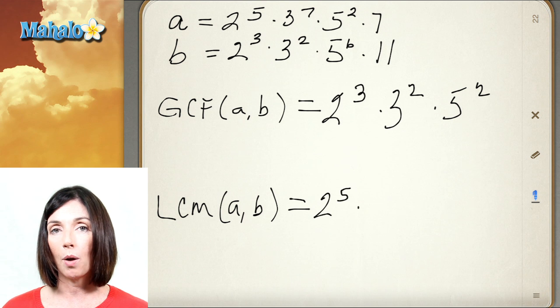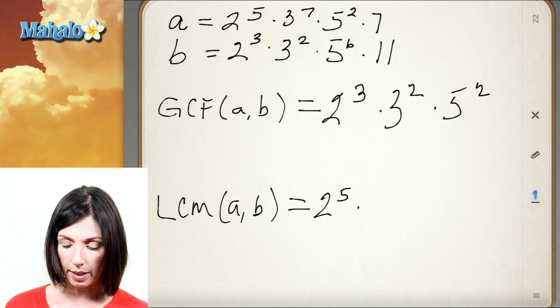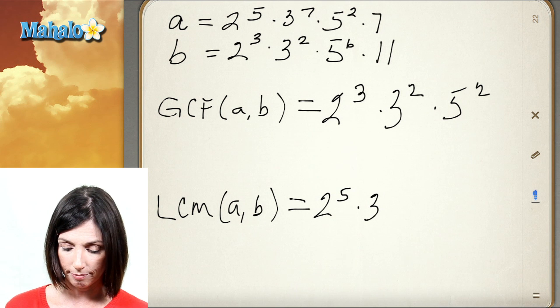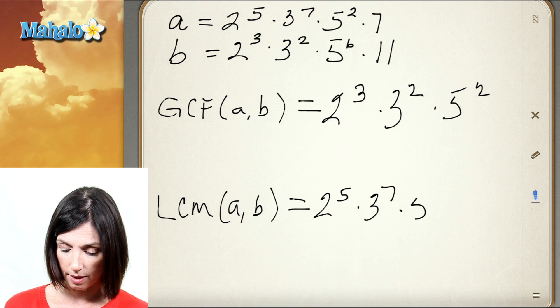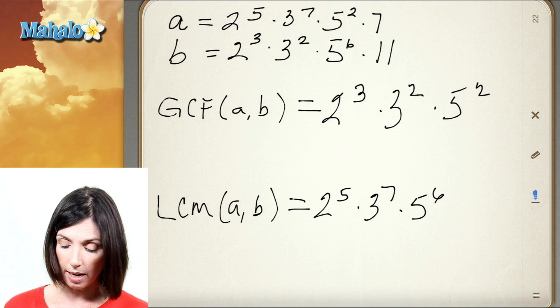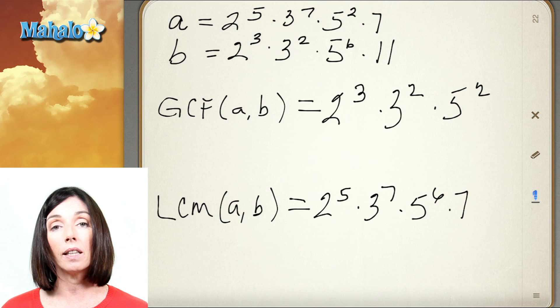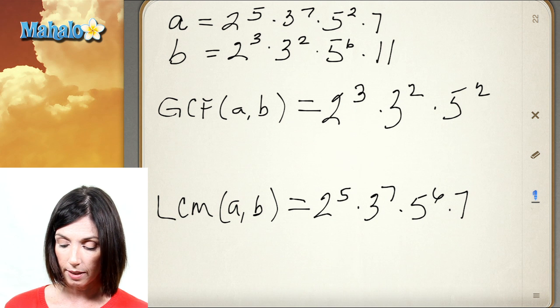And then the largest power of 3 that appears in either is 3 to the seventh. So I'm going to take that. The largest power of 5 that appears is 5 to the sixth. Now I have a 7 that appears in A so I have to take that. And I have an 11 that appears in B so I have to take that.